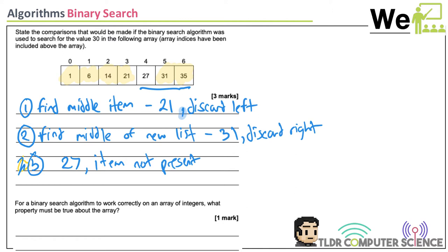Last question, really critical to binary search: for a binary search algorithm to work correctly on an array of integers, what property must be true about the array? It must be ordered. If it's not in ascending or descending order, it won't work, and you'd have to use linear search — or alternatively, sort it first and then use binary search.